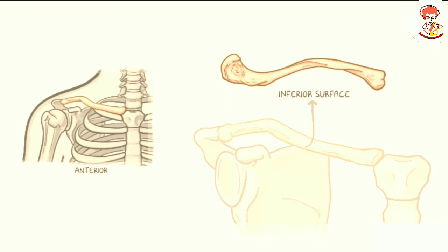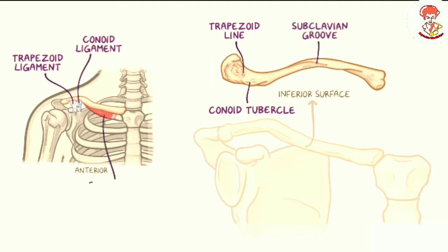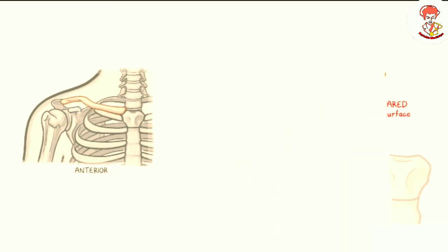On the inferior surface of the clavicle, immediately medial to its lateral end, there is a small oblique ridge of bone called the trapezoid line, where the trapezoid ligament attaches. Medial to the trapezoid line there is a conoid tubercle, which is where the conoid ligament attaches. Both the trapezoid and the conoid ligaments help stabilize the pectoral girdle. Finally, the inferior side of the clavicle has a shallow groove called the subclavian groove, where the subclavius muscle attaches. The lateral portion is flat and the inferior surface is rough compared to the smooth superior surface.